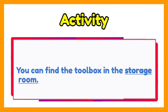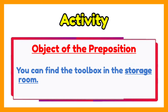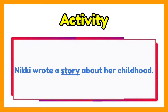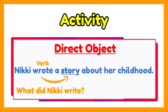Next: You can find the toolbox in the storage room. Storage room is used as an object of the preposition, because it comes after the preposition in. Next: Nikki wrote a story about her childhood. Story is a direct object — it receives the verb wrote, and it answers the question what did Nikki write?